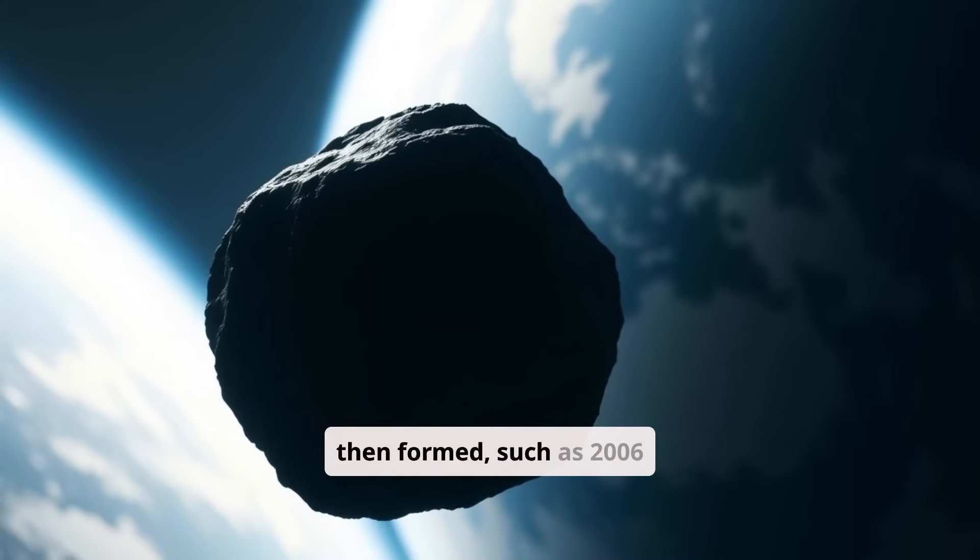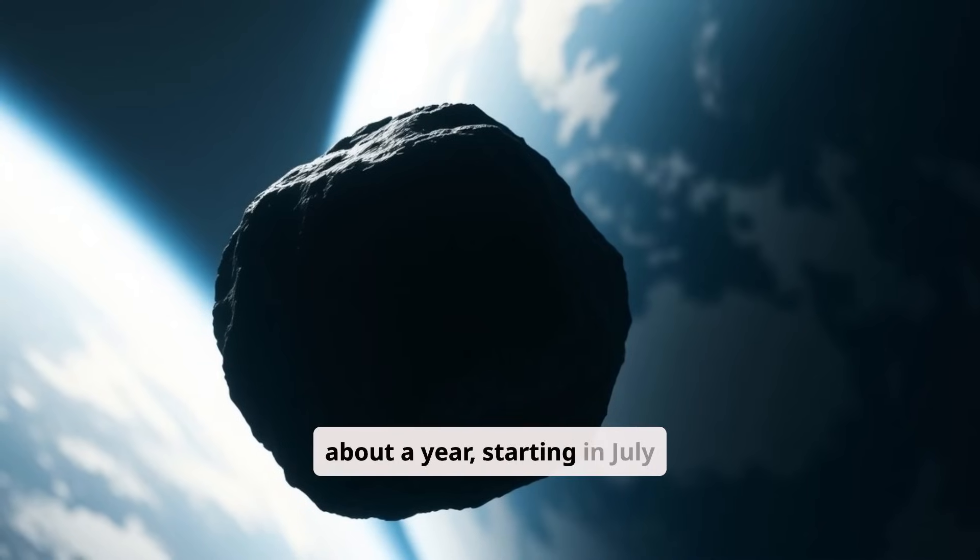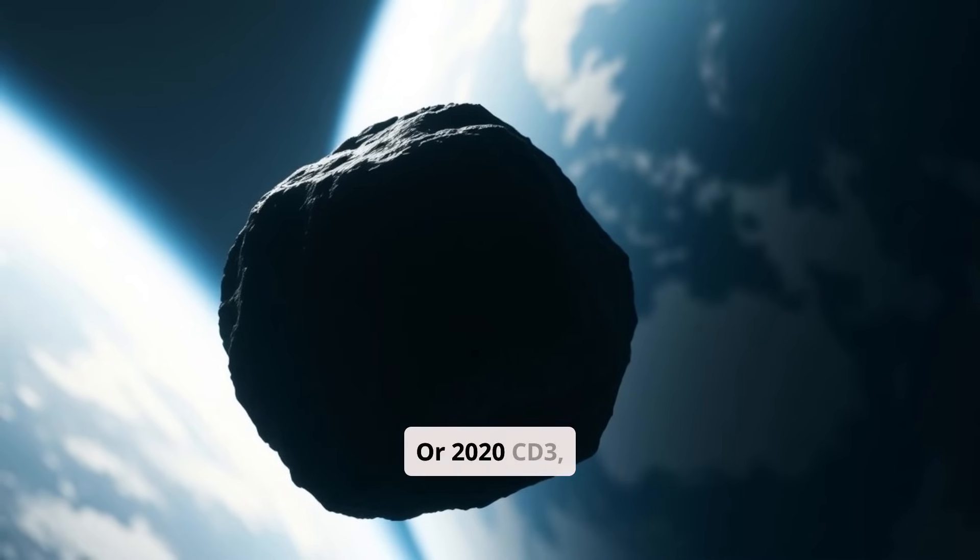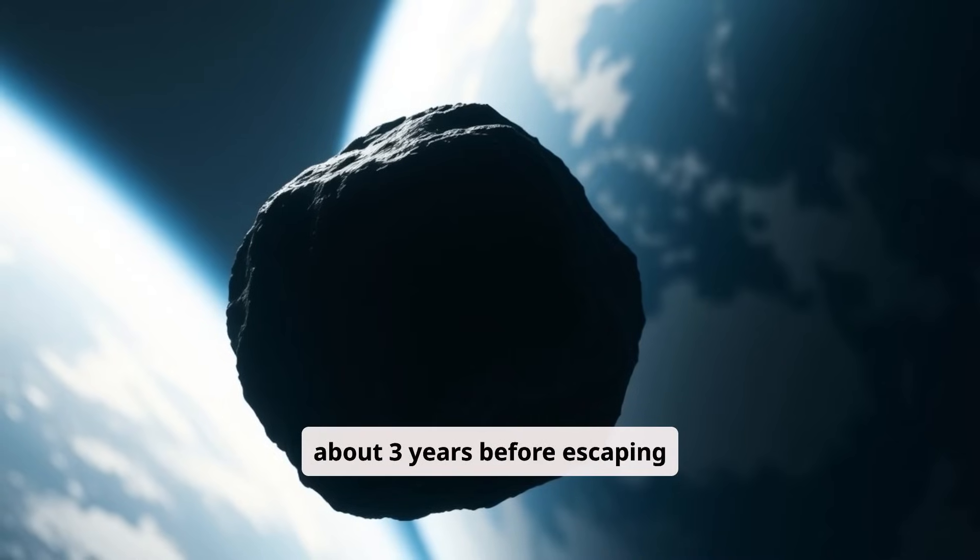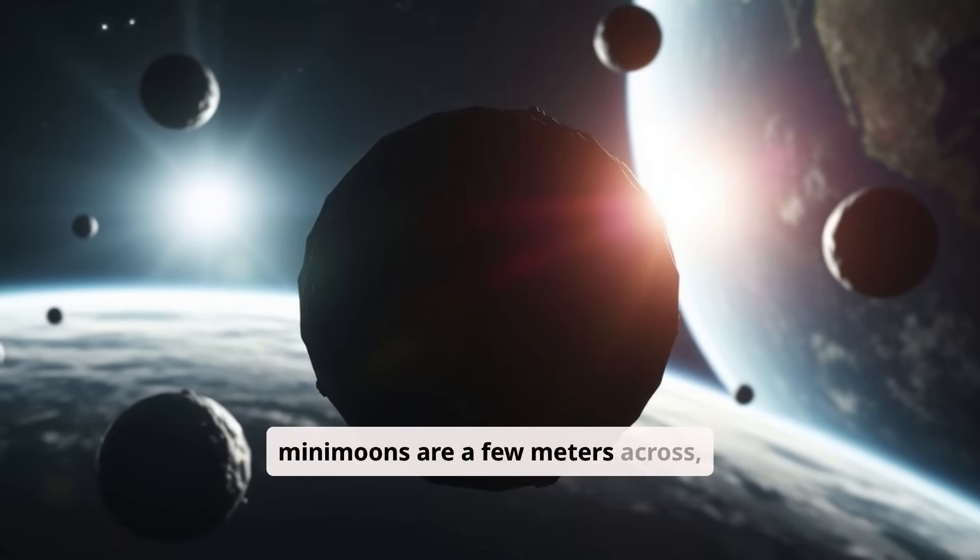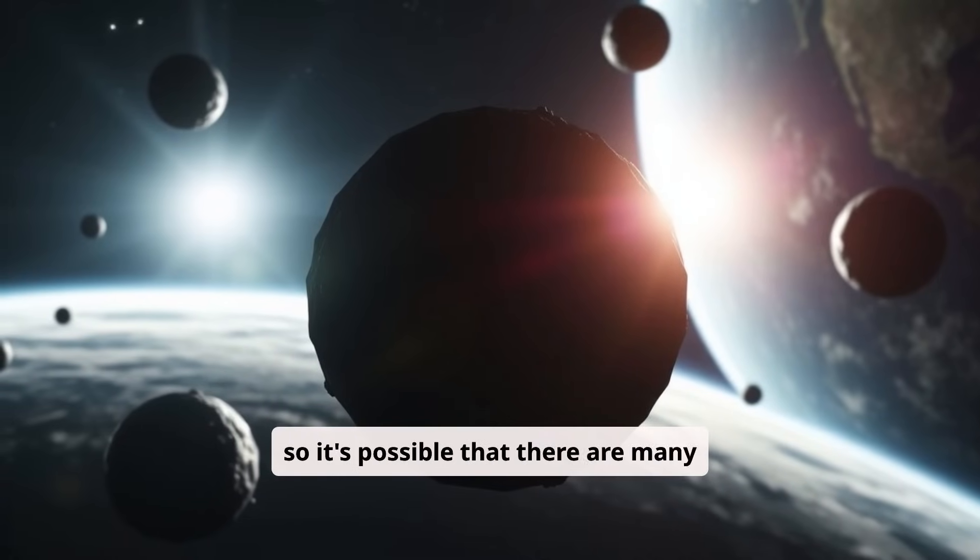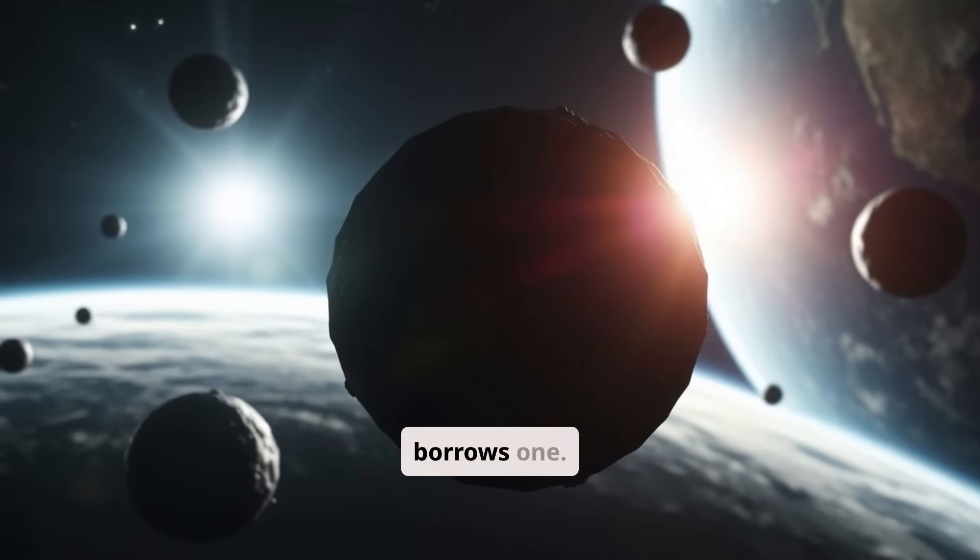Minimoons are then formed, such as 2006 RH120, which orbited Earth for about a year, starting in July 2006. Or 2020 CD3, which orbited the planet for about three years before escaping its influence in May 2020. Both of these minimoons are a few meters across, so it's possible that there are many more like them. These objects usually orbit the sun, but occasionally a planet borrows one.